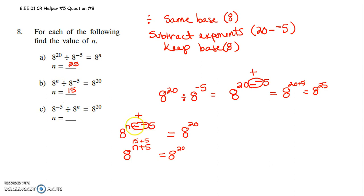I hope you can see that. Sum number minus a negative 5, because we're dividing. So we've got to subtract a negative 5. Minus a negative becomes plus. I have to come out with 8 to the 20th. So sum number plus 5 gets me 20. 15 plus 5 will get me to 20. All right, let's try the last one.